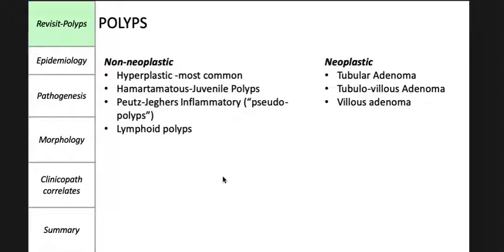In general, intestinal polyps can be classified as non-neoplastic or neoplastic in nature. The most common neoplastic polyp is the adenoma, which has the potential to progress to cancer. The non-neoplastic polyps can be further classified as hyperplastic, hamartomatous, Peutz-Jeghers, and lymphoid polyps.